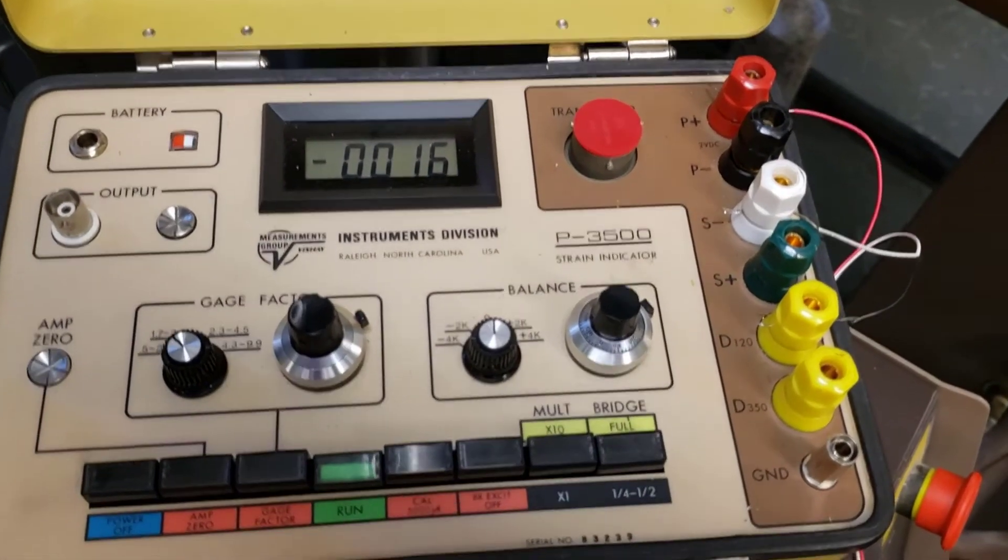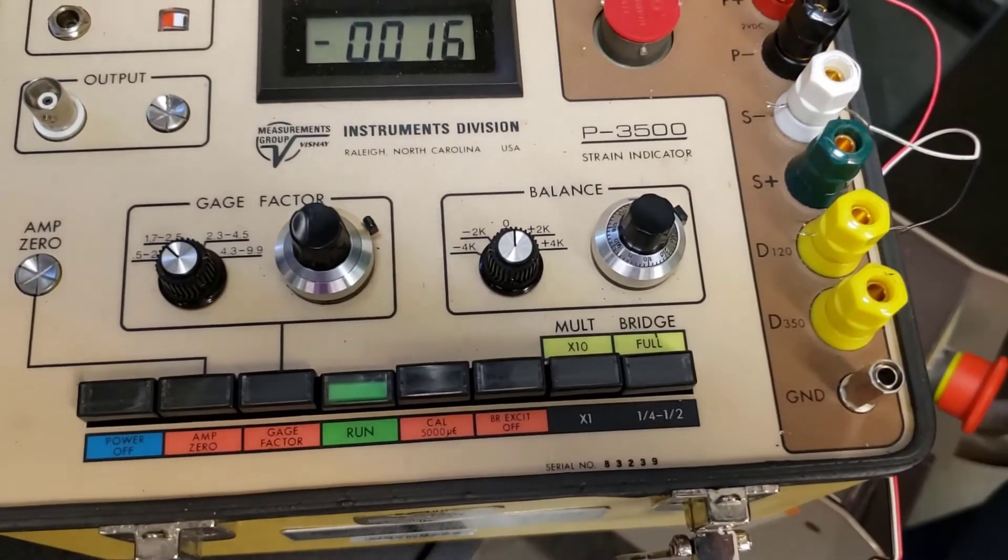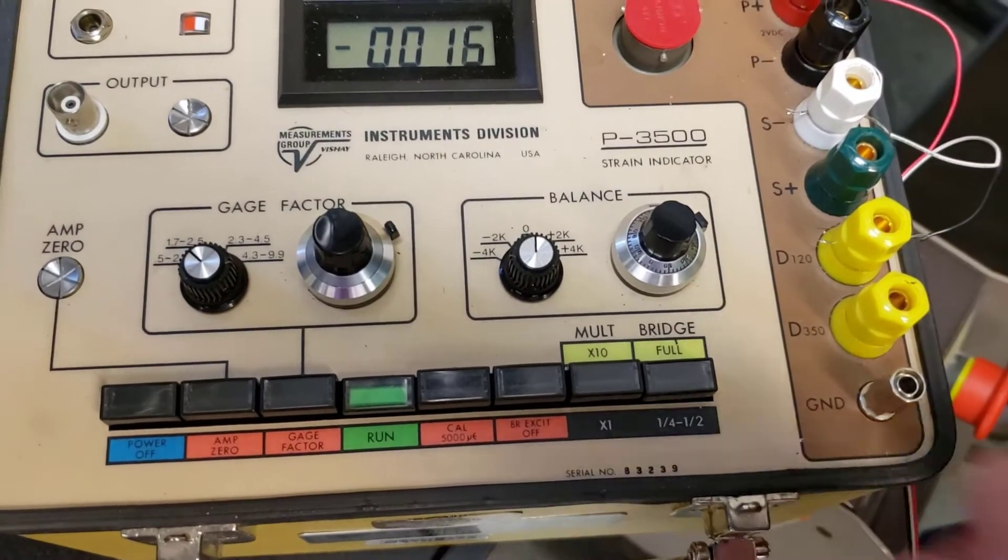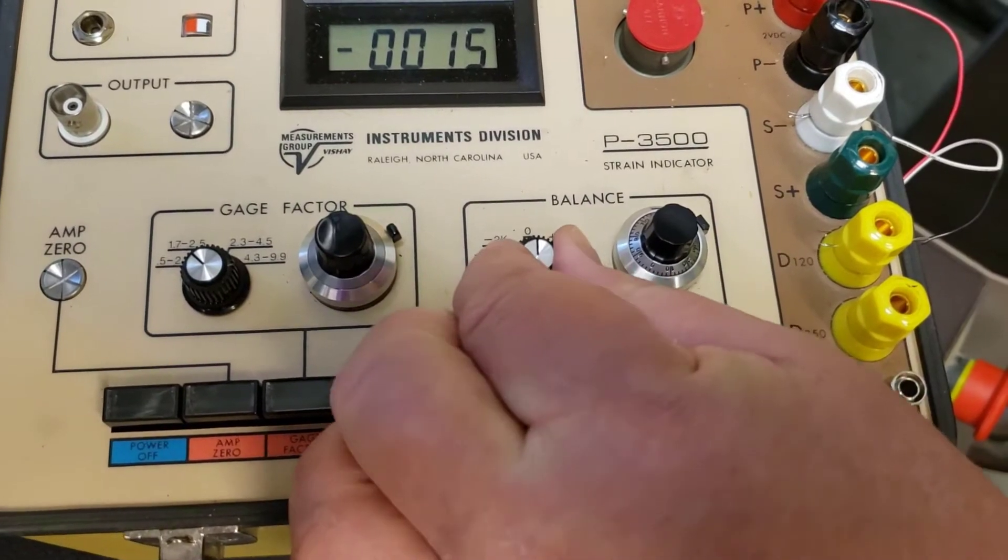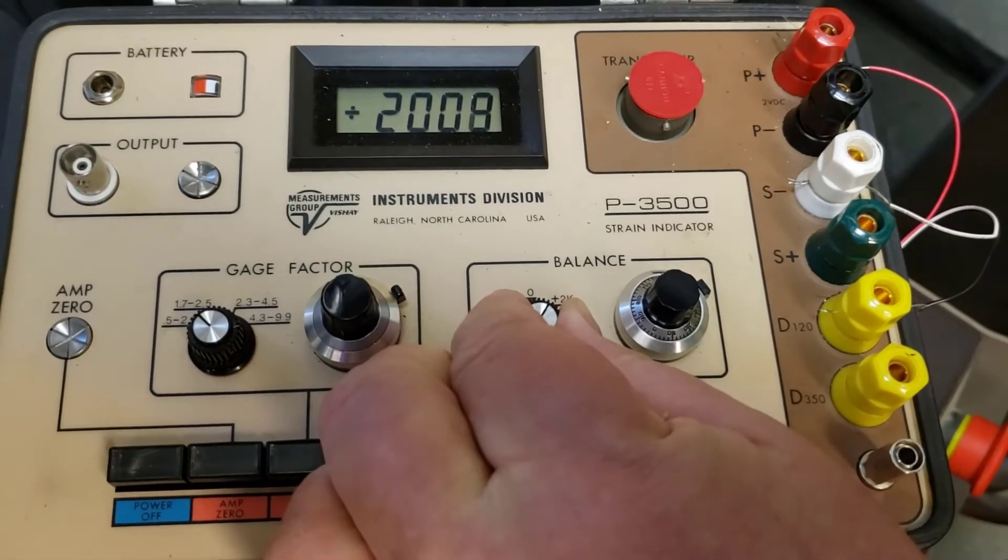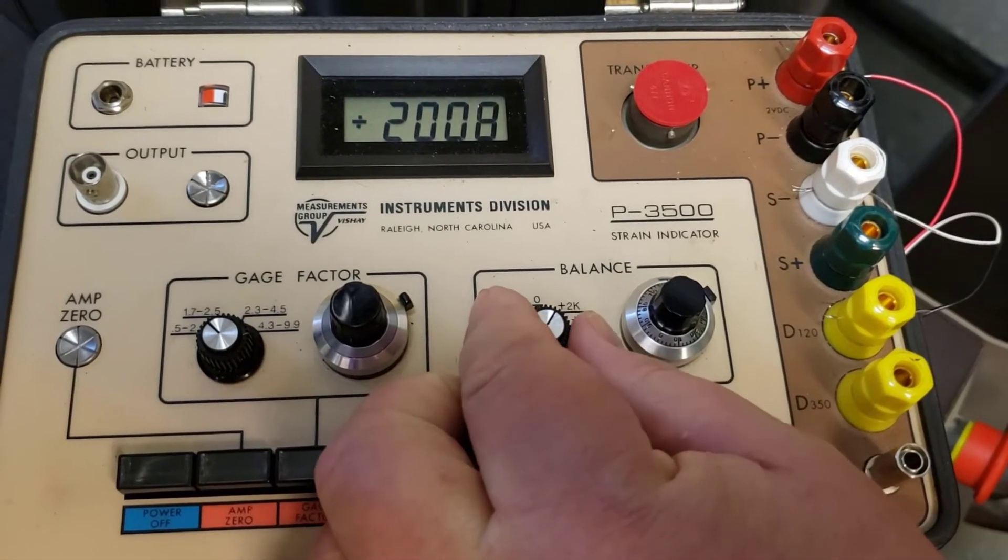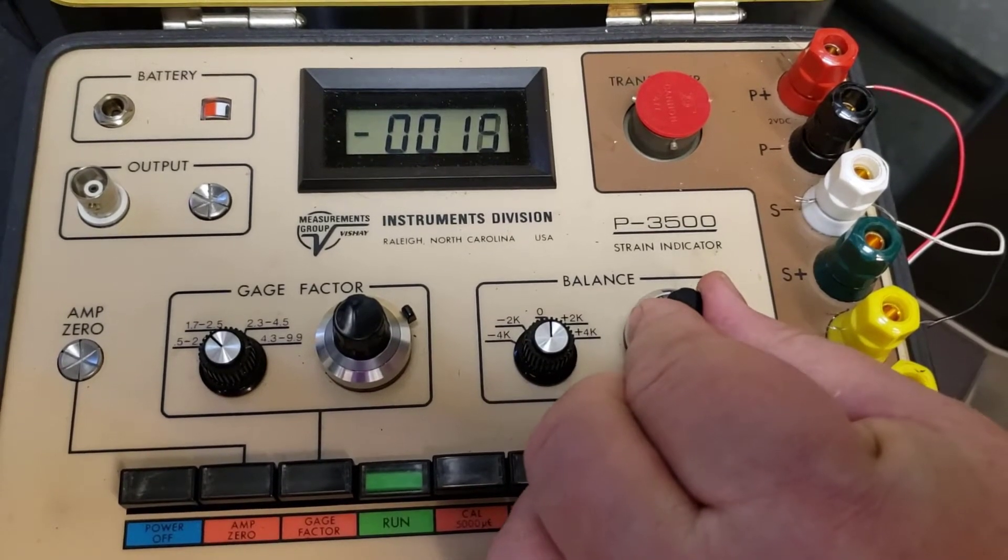Because right now there's no load on it, so we want to indicate that with a zero reading here on the scale. Again, coarse setting here. Notice I'll adjust 2K just by flipping that. So you coarse-adjust and then fine-adjust with the right.